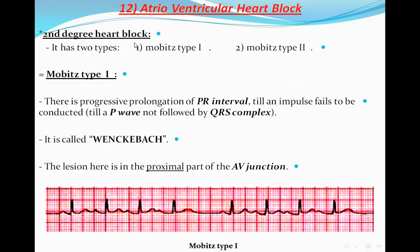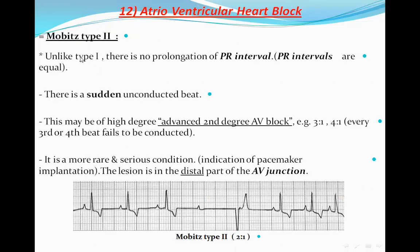In second degree heart block Mobitz type 2, unlike type 1, there is no prolongation of the PR interval — PR intervals are equal and normal. So to summarize: first degree heart block has a fixed prolonged PR interval; second degree Mobitz type 1 has progressive prolongation with some missed beats; in Mobitz type 2, we have normal and equal PR intervals but a sudden unconducted beat. This may be of high degree, called advanced second degree AV block, and can be three-to-one or four-to-one.